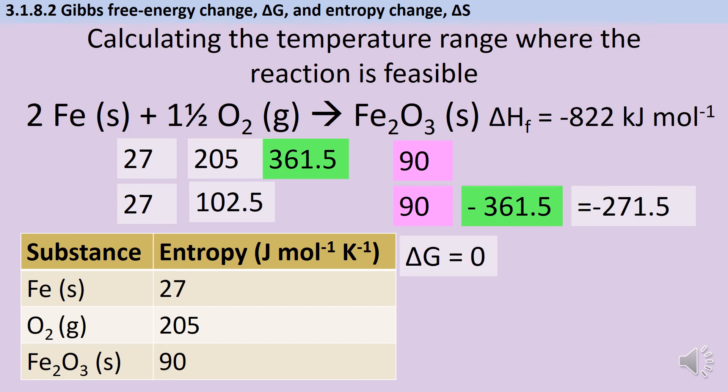This reaction will be feasible where ΔG is zero or less, so that means that ΔH will be the same as TΔS, so that ΔH take away TΔS is zero. So therefore minus 822, that's my ΔH of formation value, must be the same as minus 0.2715 times by the temperature in Kelvin. So if I divide both sides by that change in entropy, I get a temperature of 3068 Kelvin. So this reaction is going to be feasible from zero Kelvin up to this point, and after that point at a higher temperature it will stop being feasible.